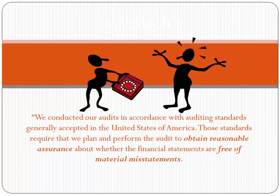Now we're going to talk about materiality. Here we have this cartoon where it says: we conducted our audits in accordance with auditing standards generally accepted in the United States of America. Those standards require that we plan and perform the audit to obtain reasonable assurance about whether the financial statements are free of material misstatements. We're going to analyze what these components mean — what exactly is a material misstatement, and what does 'obtain reasonable assurance' mean.